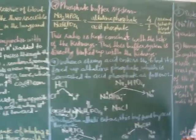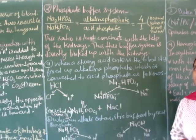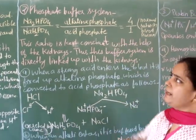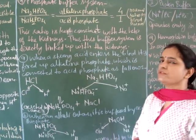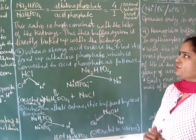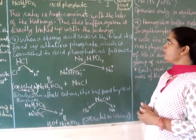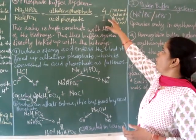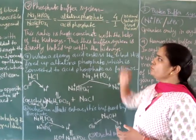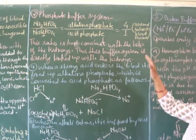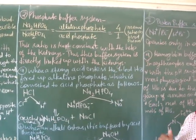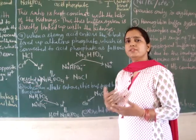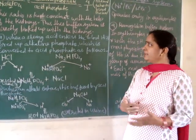The second physiological buffer system is the phosphate buffer system. It is made up of two components: alkaline phosphate (Na₂HPO₄) and acid phosphate (NaH₂PO₄). They are present in blood plasma in a normal ratio of 4 to 1, and this ratio is kept constant with the help of the kidneys, meaning this phosphate buffer system works in conjunction with the kidney.